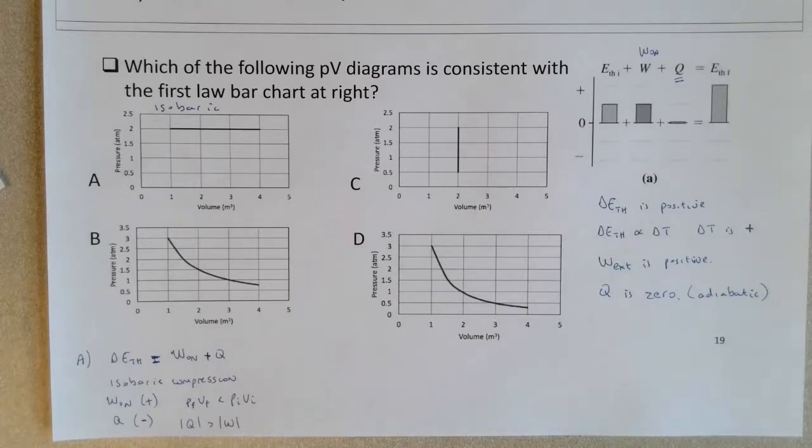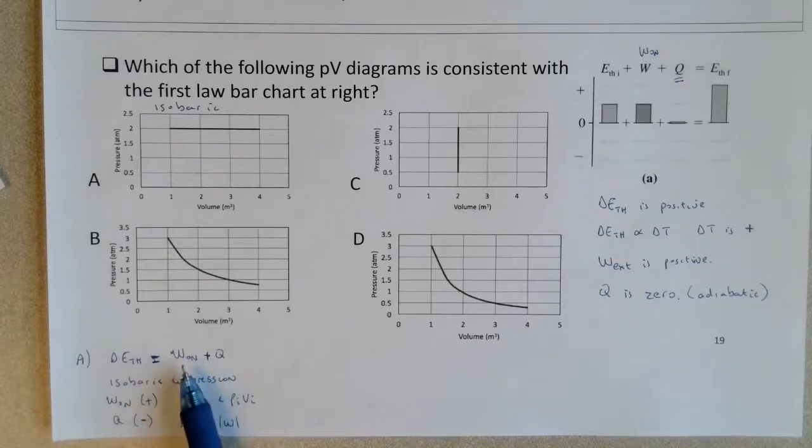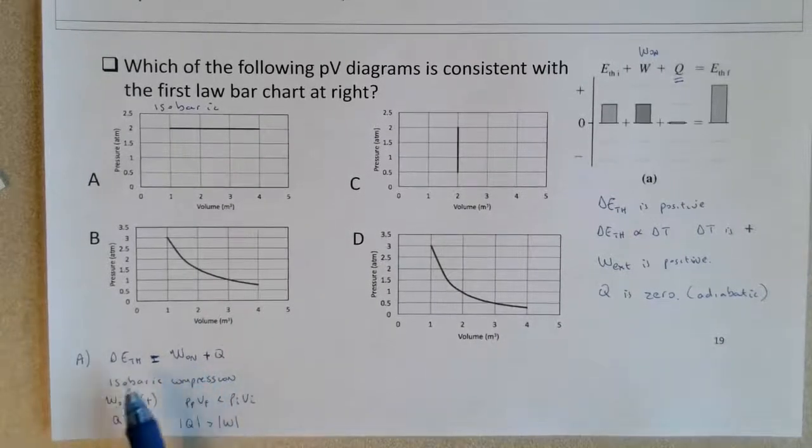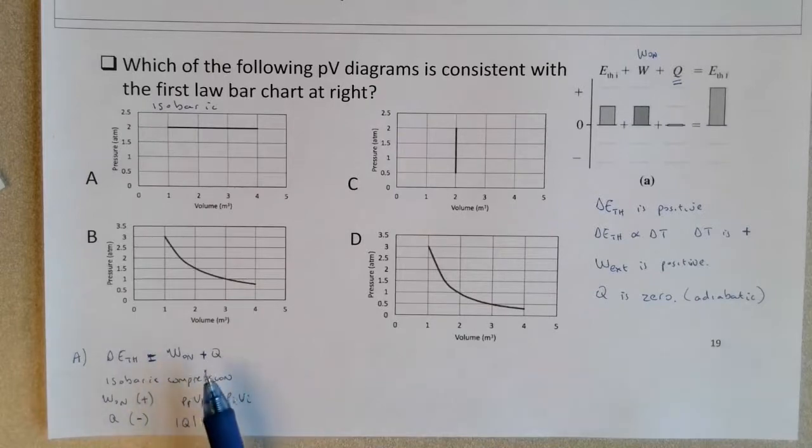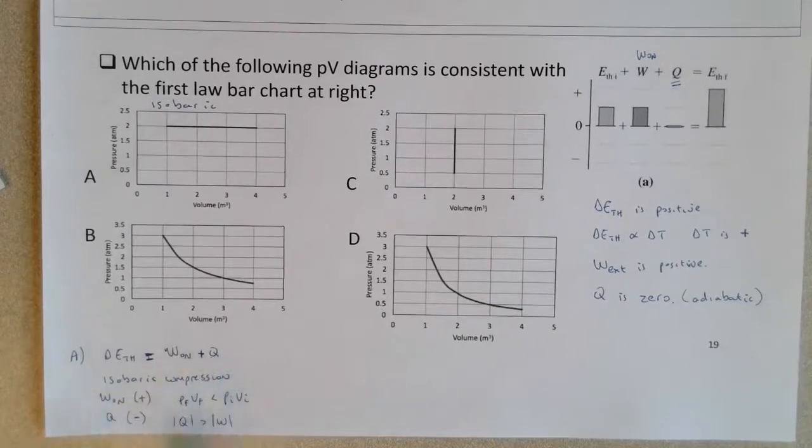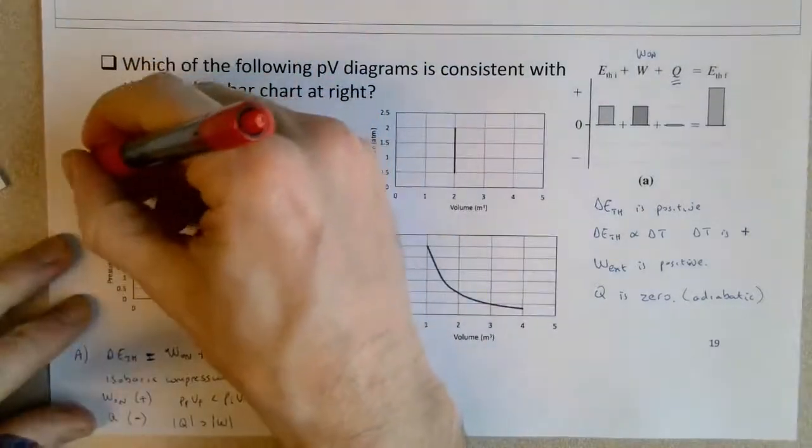There's no way that this first law bar chart could be described by an isobaric process. You can work through the isobaric expansion. In that particular case, an isobaric expansion work on would be negative. The delta E_TH would be increasing, so delta E_TH would be positive. So you've got an increase in temperature even though there's negative work done on the gas. So in that case, Q must be positive, and again still bigger than the work. So A for many reasons outlined here cannot be the correct answer.